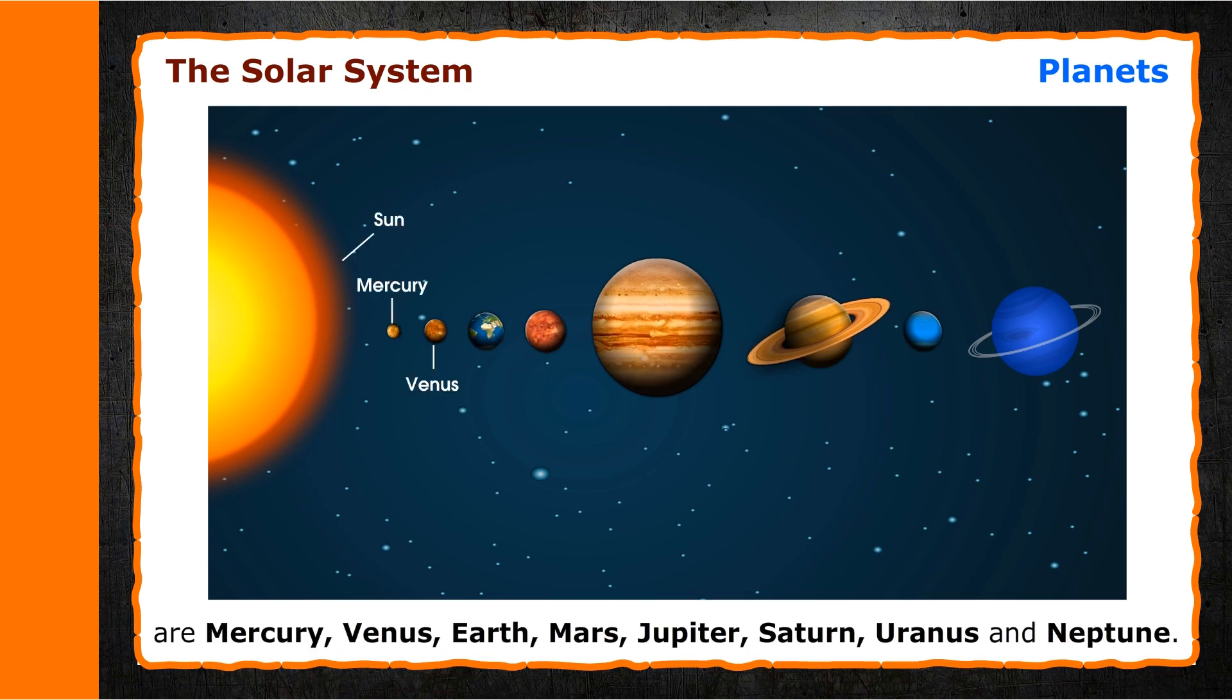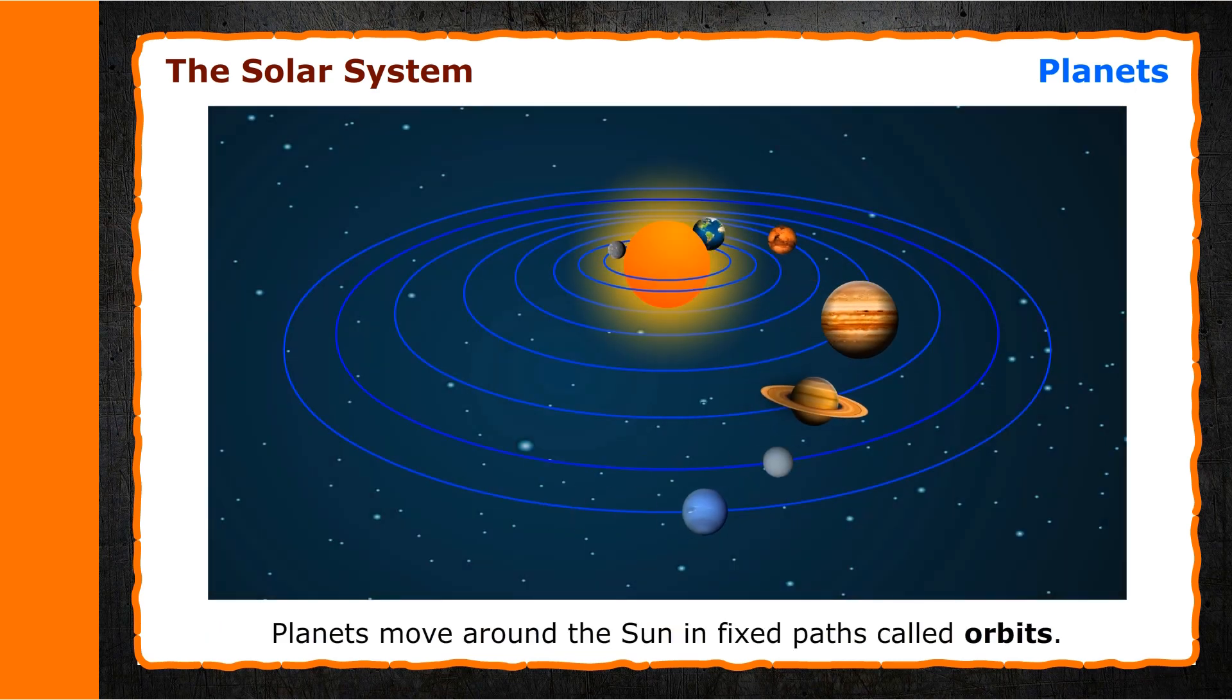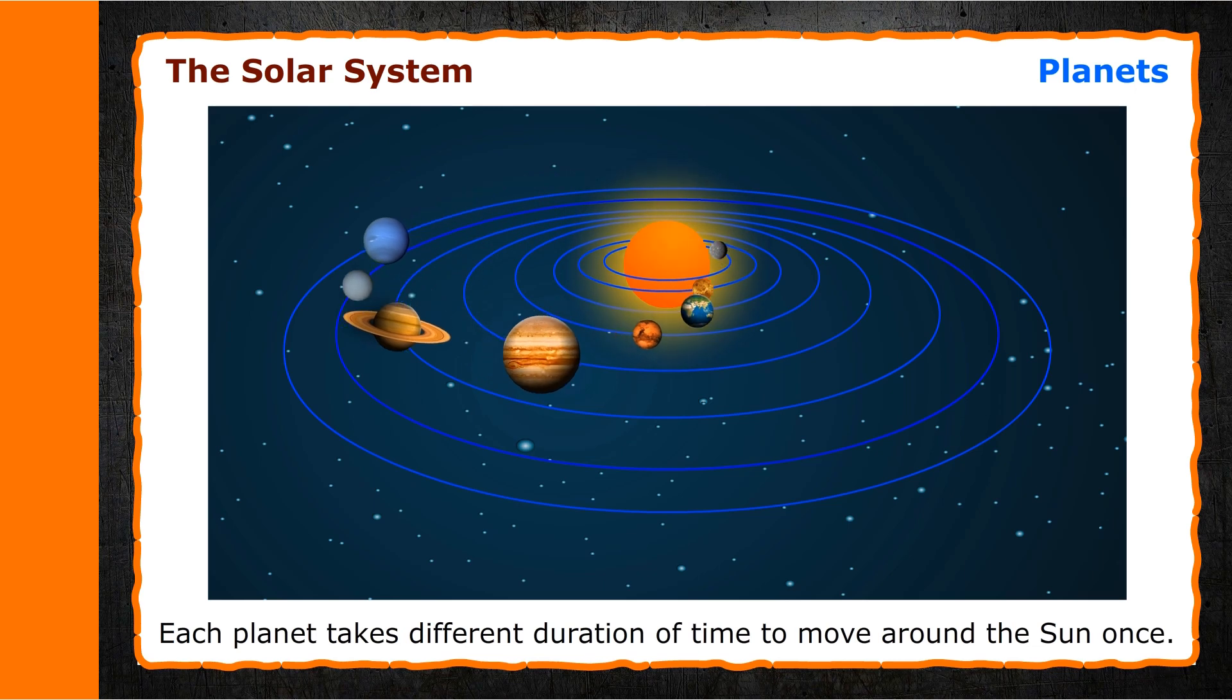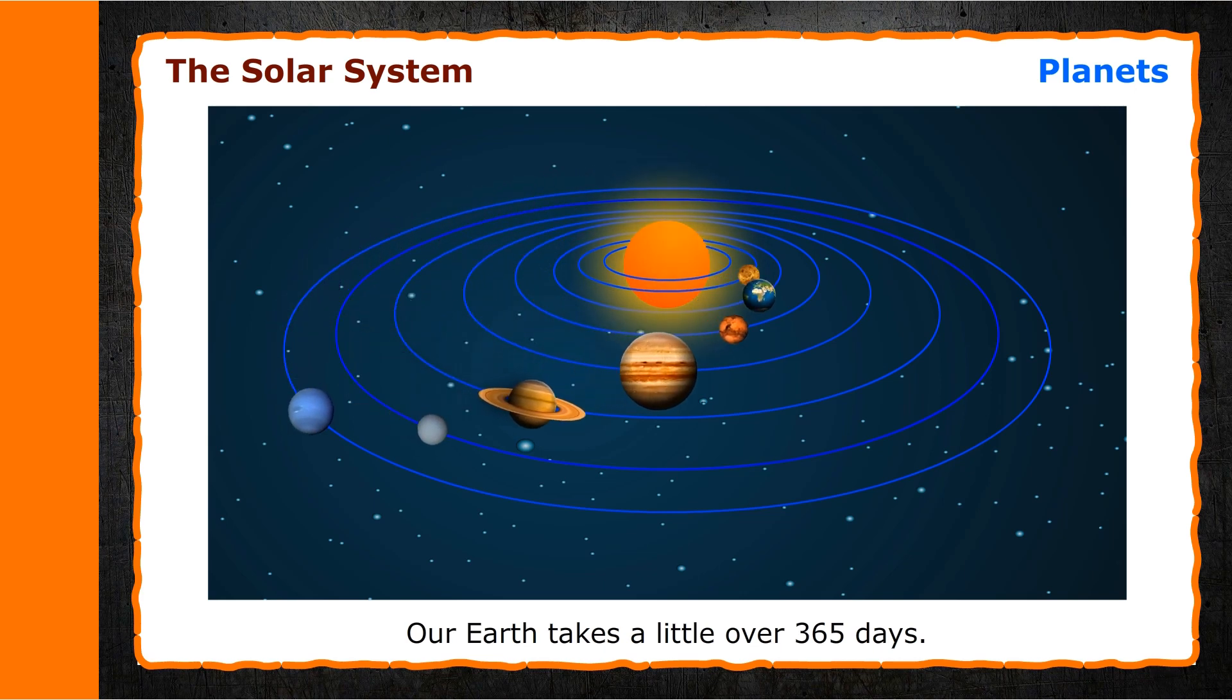Planets move around the Sun in fixed paths called orbits. Each planet takes a different duration of time to move around the Sun once. Our Earth takes a little over 365 days. We call this period of time a year.